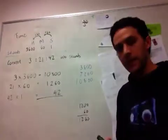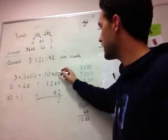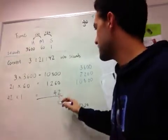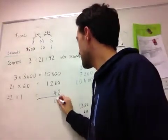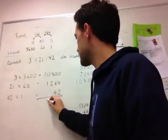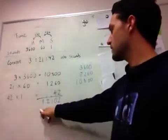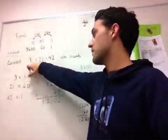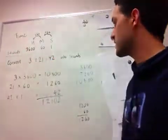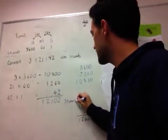So I've lined these all up so that I can add them together. I'm going to have 2 seconds here, add the 60 and the 40, so it's going to give me a 0 and a 1 to carry across. I want to carry across 2, and this would be my final answer. So in 3 hours, 21 minutes, and 42 seconds, I have 12,102 seconds.